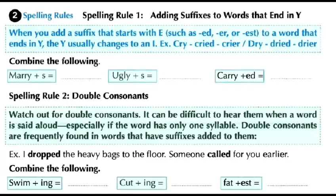For example: the word 'cry' becomes 'cried' and 'crier'; 'dry' becomes 'dried' and 'dryer.' Now, can you combine these words? 'Marry' — we want to add -s; 'ugly' — we want to add -s; 'carry' — we want to add -ed.